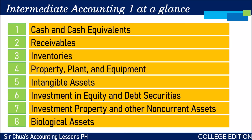Most of these account titles were already introduced to you in senior high school, but the purpose of Intermediate Accounting 1 is to dig deeper into them one by one — what is included in the cash reported on the statement of financial position, how do we record and recognize inventories, how much should inventories be presented in the financial statements, what are intangible assets and what is the difference between a copyright and a trademark, what are investments in equity securities, and why do we have the word 'debt' when we're talking about assets? We will talk about all of these in deep detail.